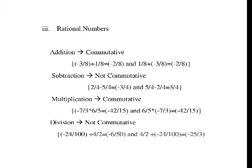In subtraction, subtraction is not commutative for rational numbers. Consider the example: 2 by 4 minus 5 by 4 gives minus 3 by 4. Similarly, 5 by 4 minus 2 by 4 gives 3 by 4. The first gives a negative value and the second gives a positive value. So subtraction is not commutative for rational numbers.